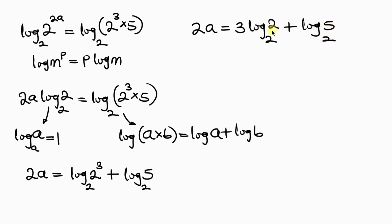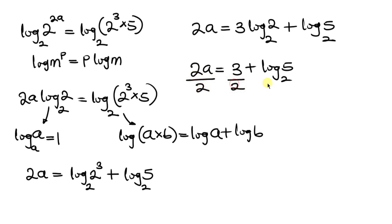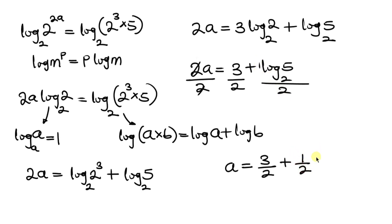Since log 2 base 2 equals 1, we have 2a equals 3 plus log 5 base 2. To get the value of a, we divide each term by 2. So a equals 3 over 2 plus — there is an invisible 1 in front of log 5 — so 1 over 2 times log 5 base 2. And this is our final answer.